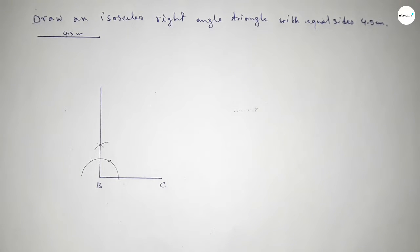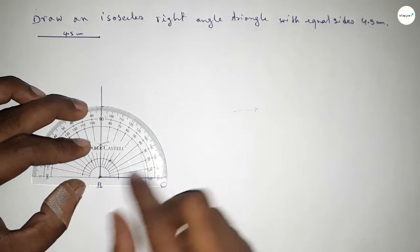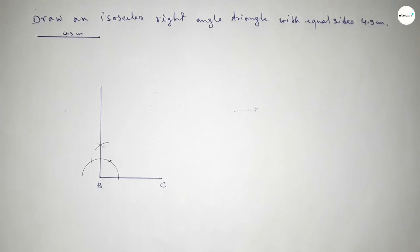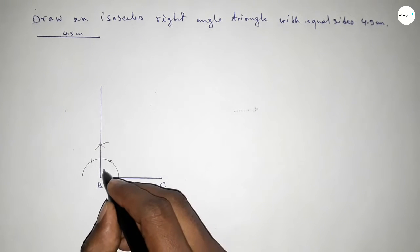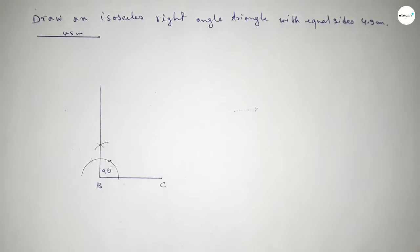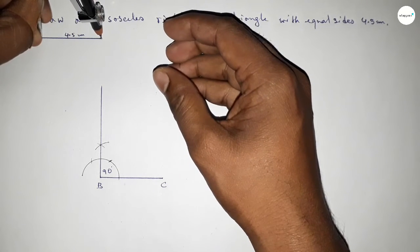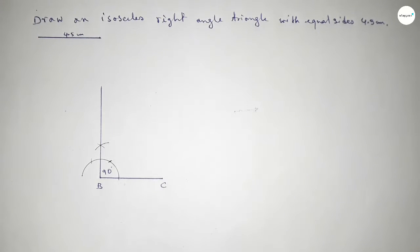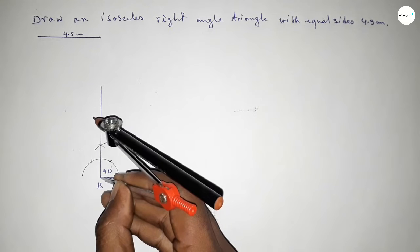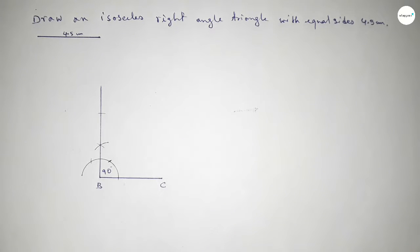Now joining this side to get the 90 degree angle. Checking — this is perfectly a 90 degree angle. Now taking the length 4.5 centimeters using the compass and putting the compass on point B, cutting here to mark the point.